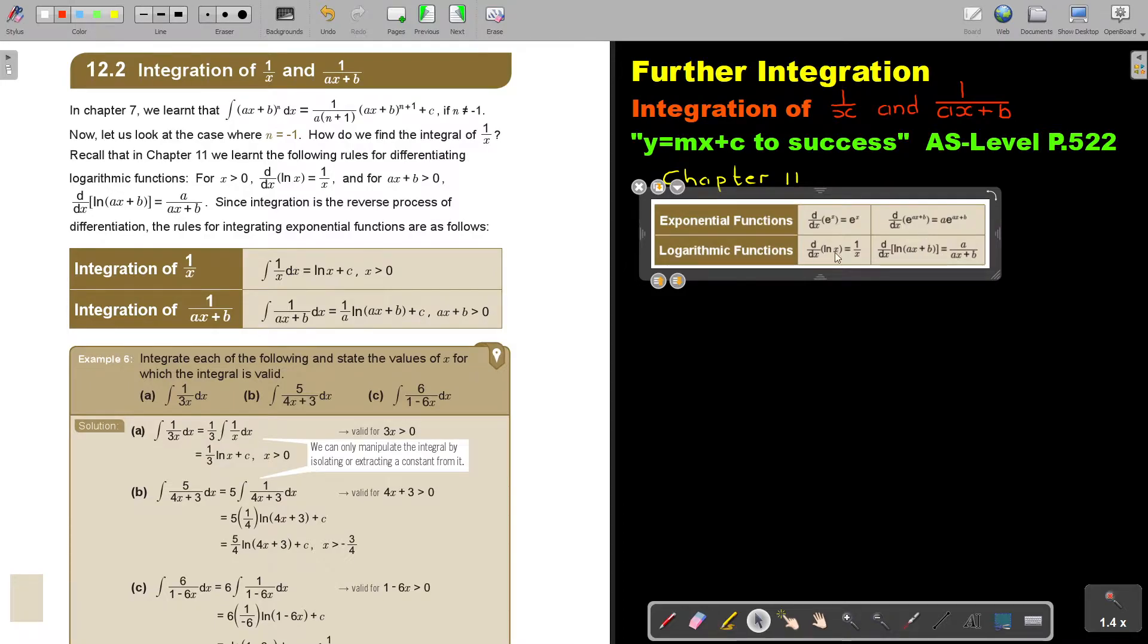And for ax plus b bigger than 0, if we differentiate ln of ax plus b, we get a over ax plus b. That was if we went from this side, differentiate to that side. Now, integration is the reverse, going back. So since integration is the reverse process of differentiation, the rules for integration of exponential functions are as follows.